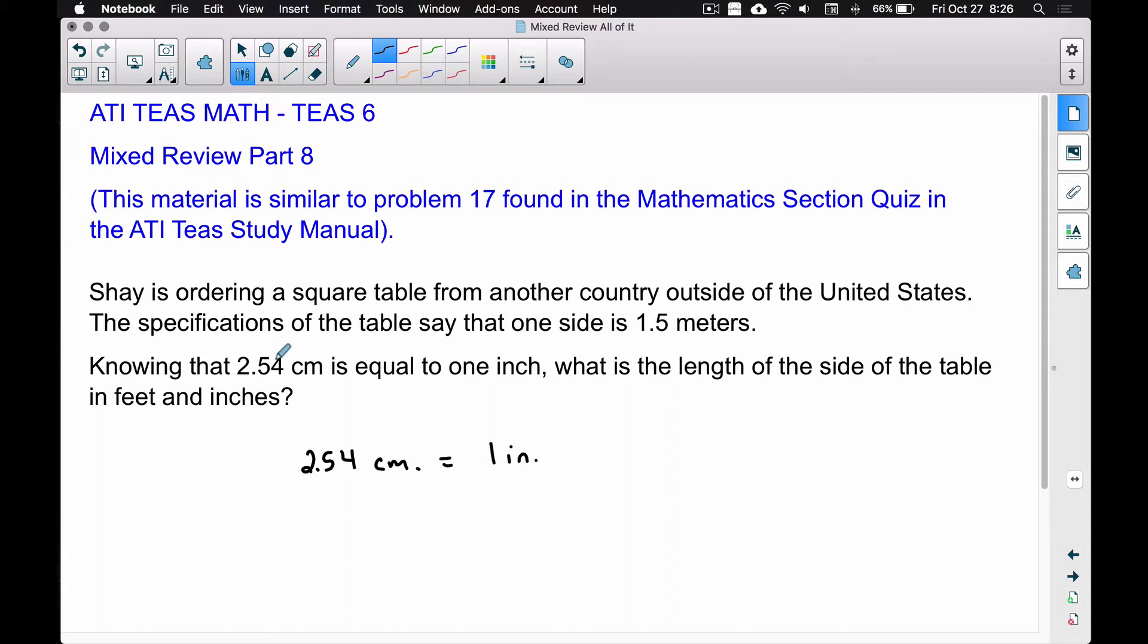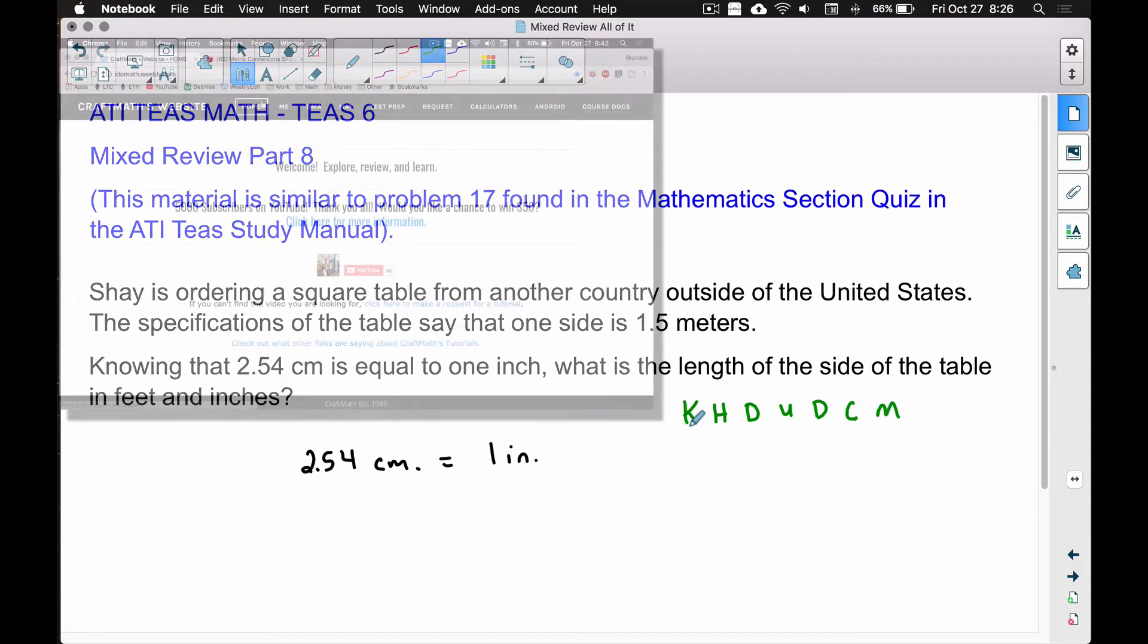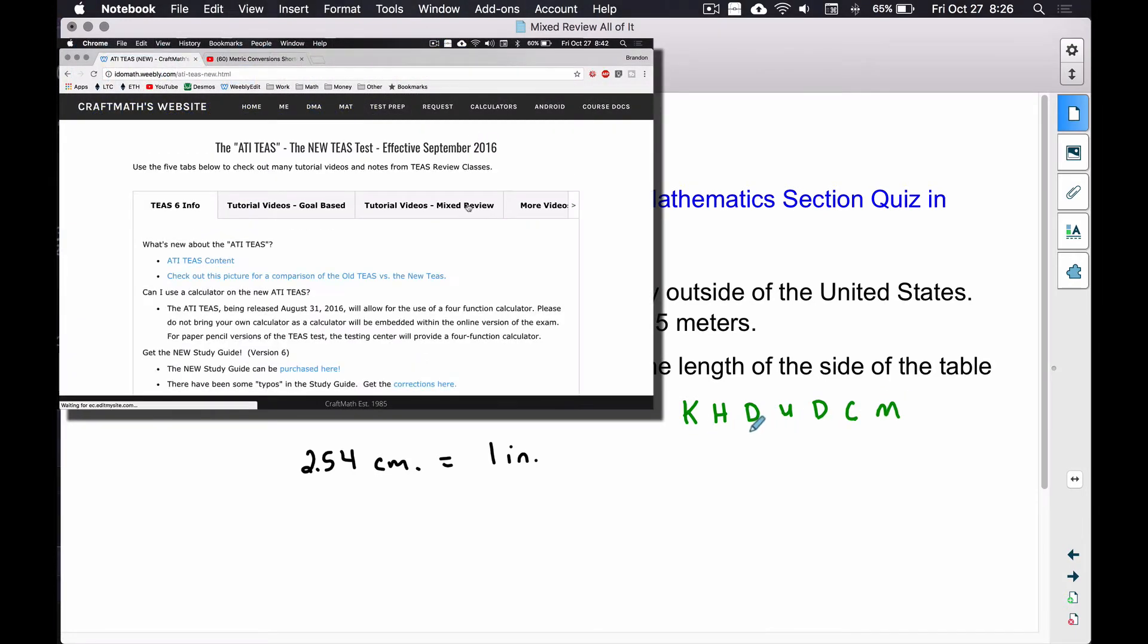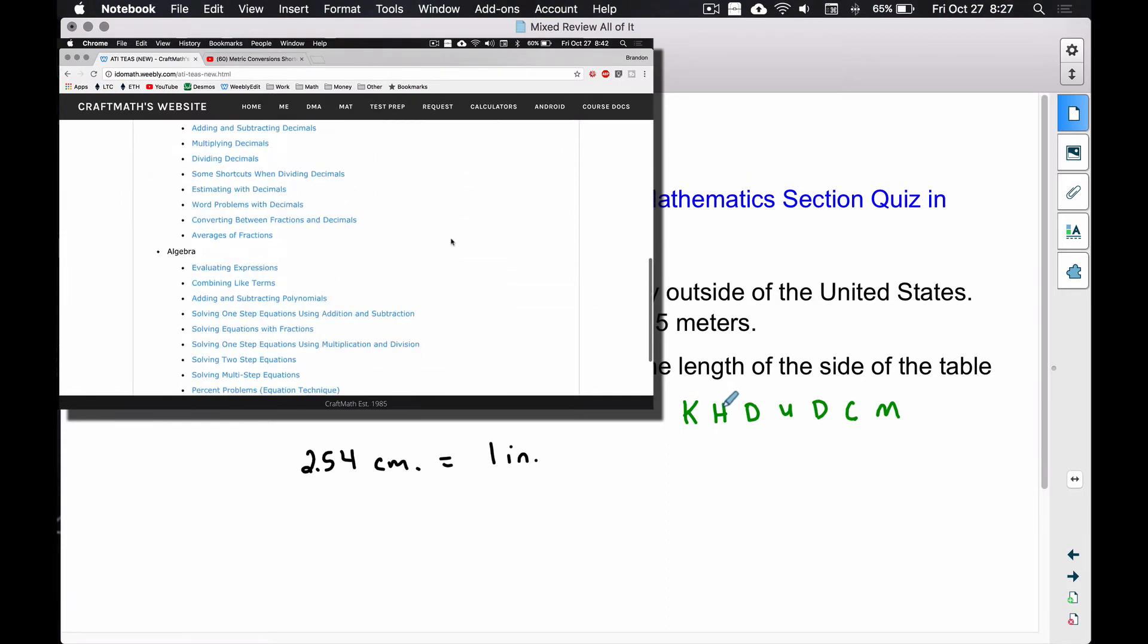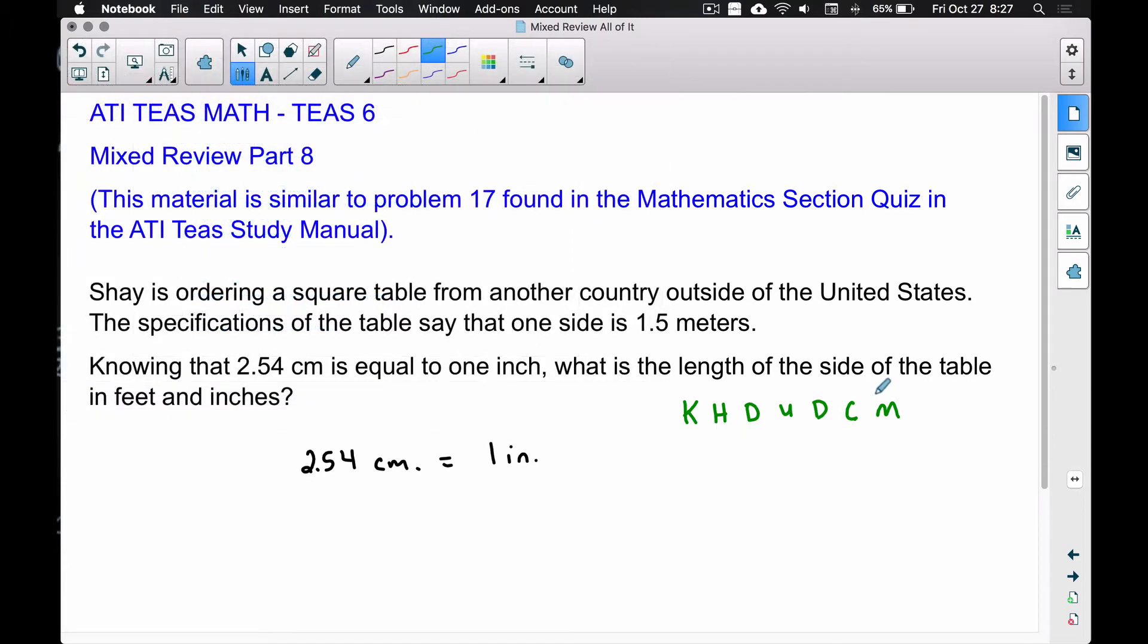A common acronym that I think of when dealing with metric measurements is: King Henry Drinks Ucky Dark Chocolate Milk. This will help you - I have a video over at my website that talks about several examples of applying this. This is kilo, hecto, deca, the unit, deci, centi, and milli. The centi stands for centimeter - it can also stand for centigram or centiliter. The U stands for the unit that we're dealing with. In this case, we're dealing with meters, but we could be dealing with grams or liters, and this same thing still applies.